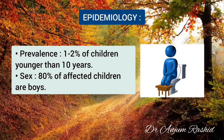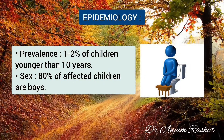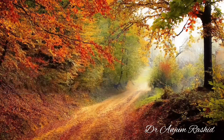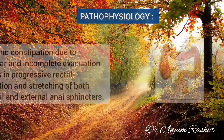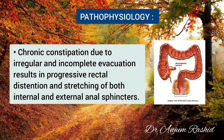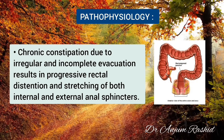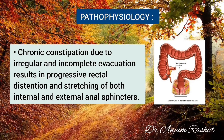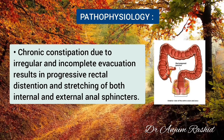Prevalence is 1 to 2 percent of children younger than 10 years, and 80 percent of the affected children are boys — it is more common in males. The pathophysiology is that chronic constipation due to irregular and incomplete evacuation results in progressive rectal distension.